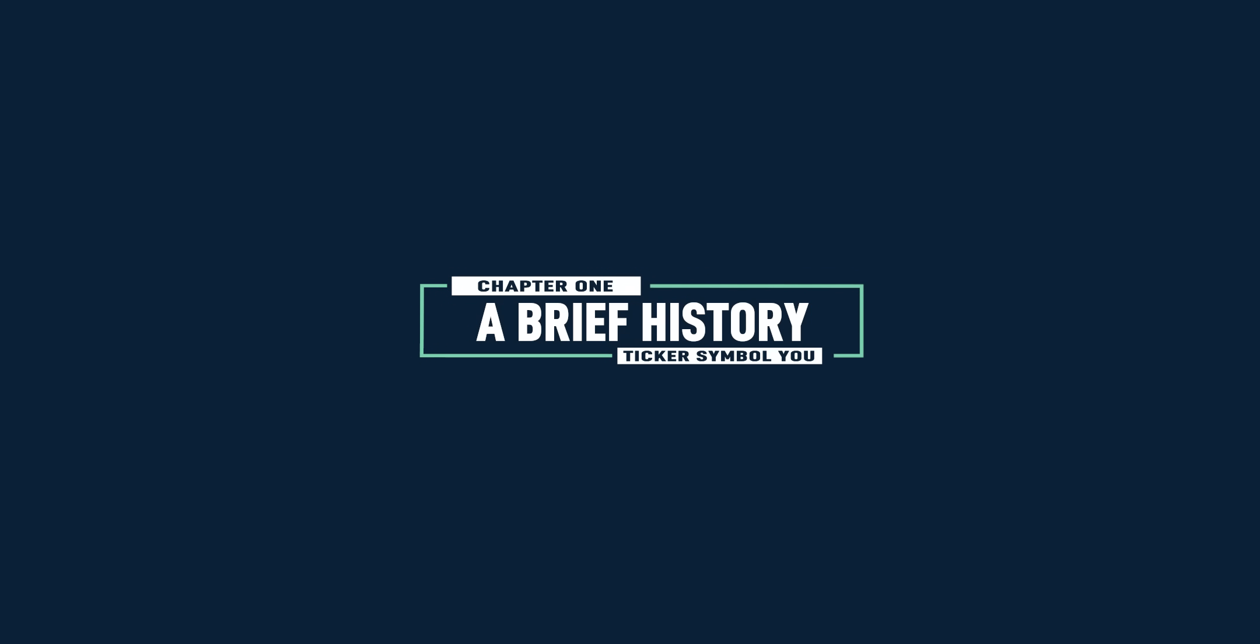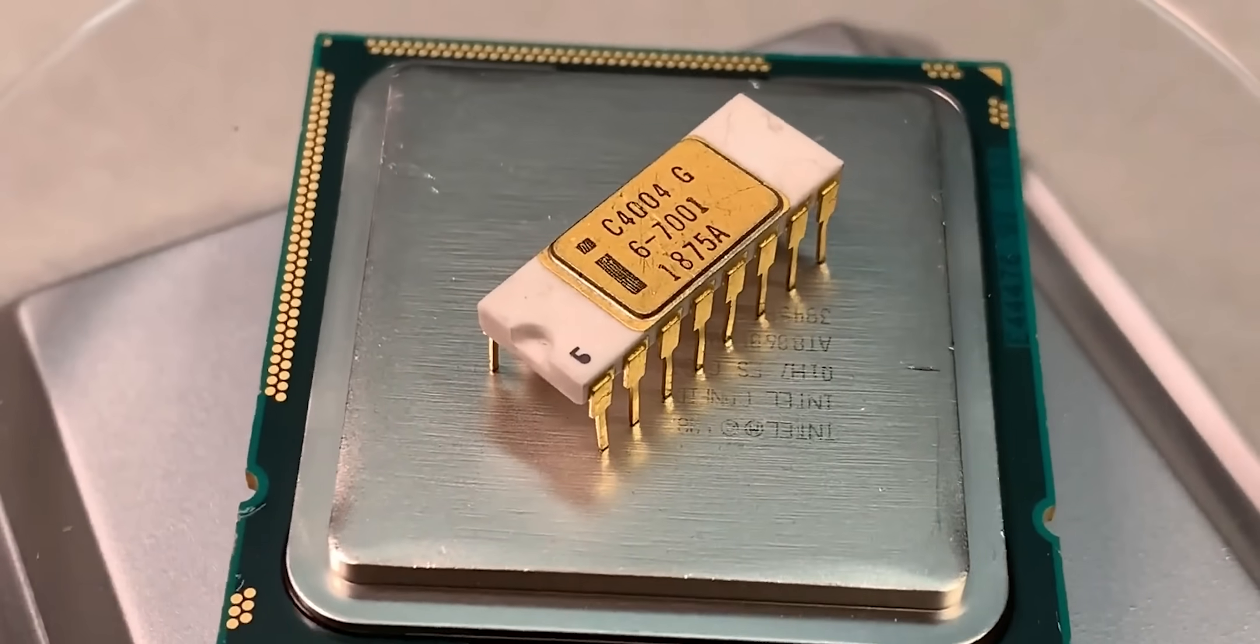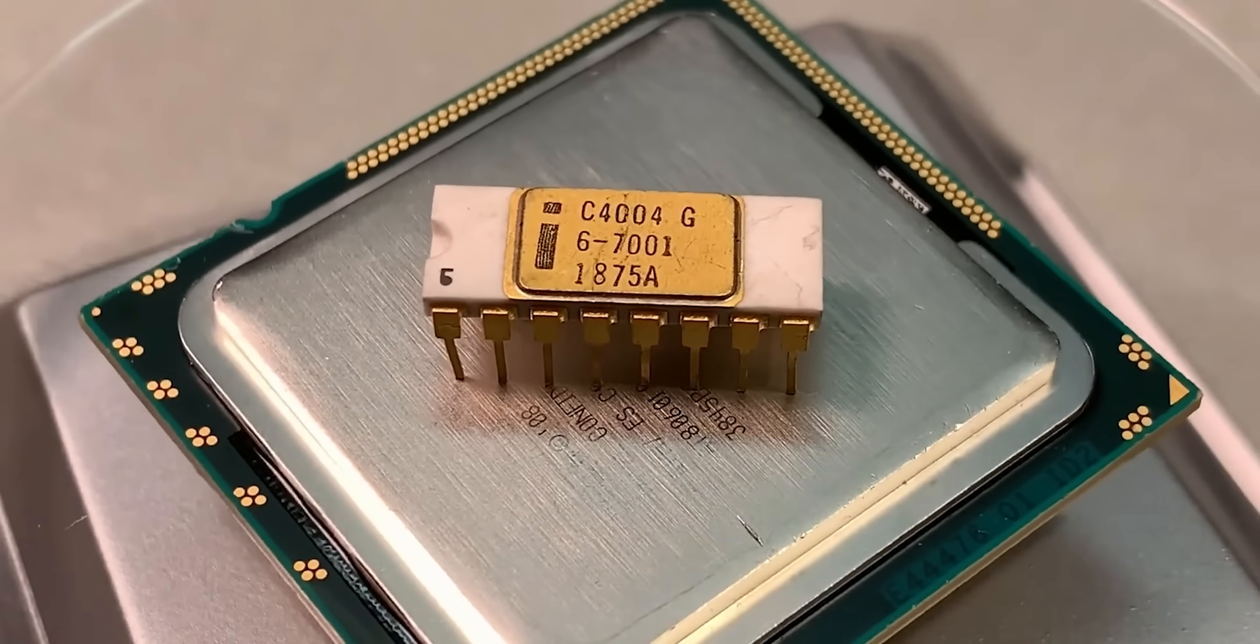Let's start from the beginning. In 1971, Intel came out with the very first microprocessor called the Intel 4004, which had a whopping 2,000 transistors on it.